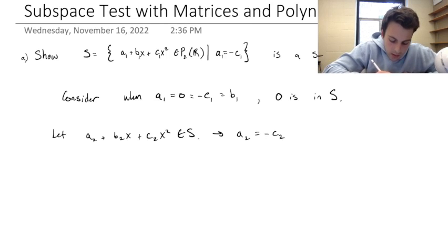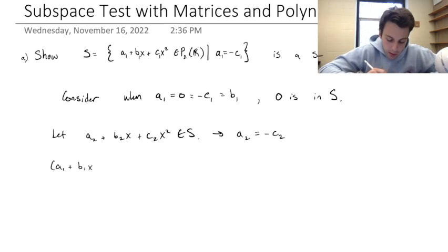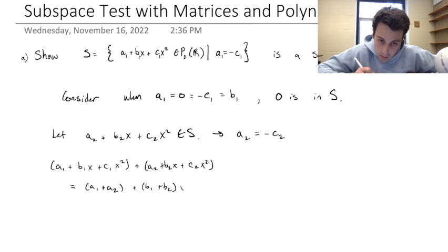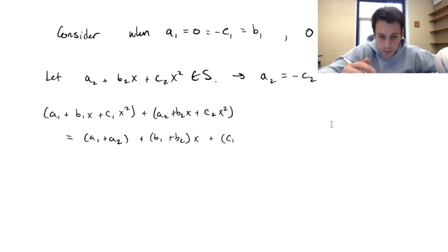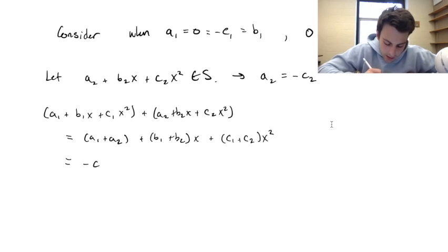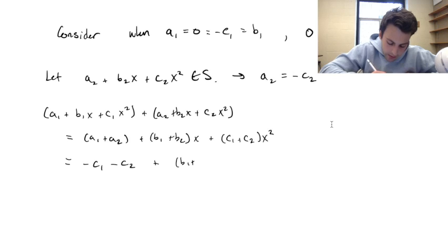Let's add two polynomials from this vector space together and group the terms. Notice that a1 is just minus c1 and a2 is minus c2, and we can factor out the negative.